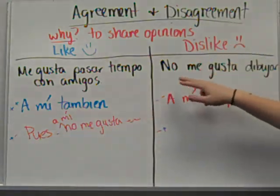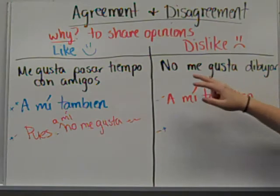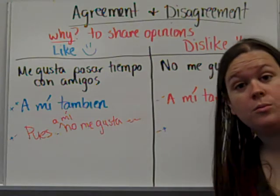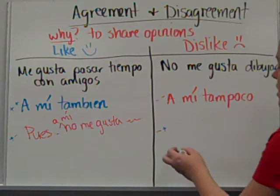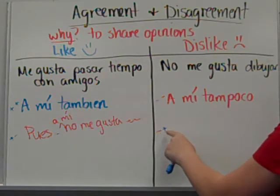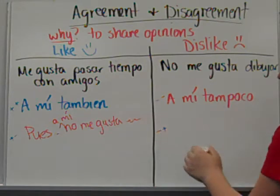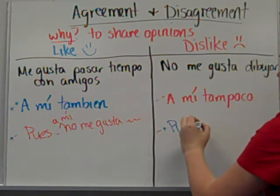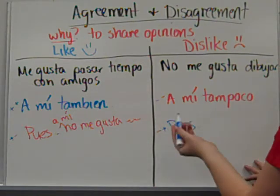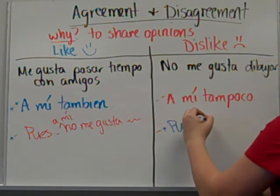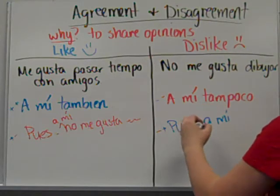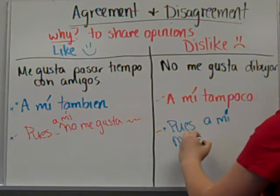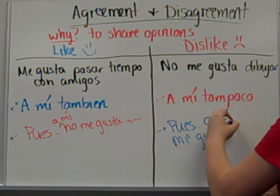And over here we've had our negative statement: I don't like to do this. But maybe you do. So you are disagreeing — you have a positive statement. 'I don't like to draw. Well, pues, I do like to draw.' 'A mí' — with an accent — 'me gusta dibujar.'